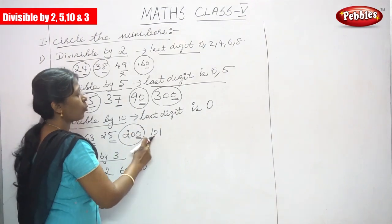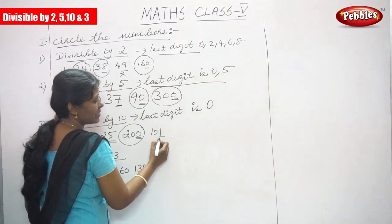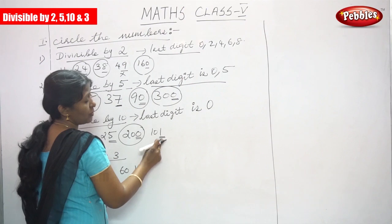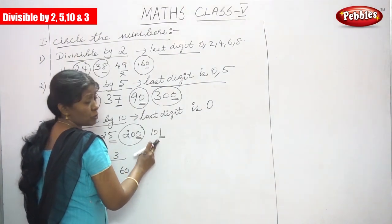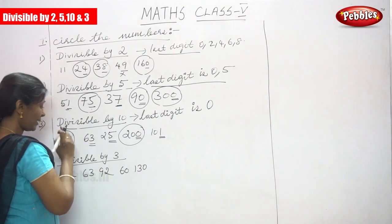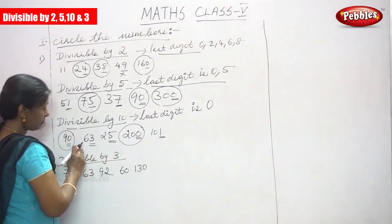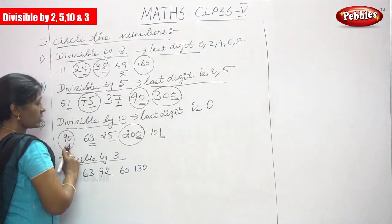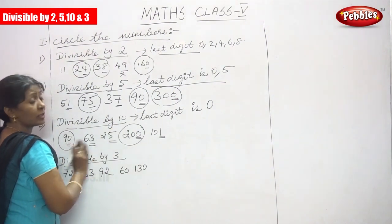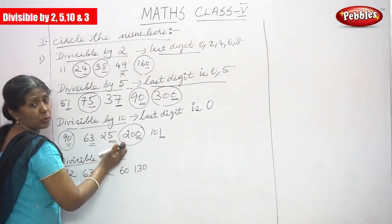Next is 101: the last digit is 1, so it does not end with 0 and is not divisible by 10. Do not circle the number. The answers are 90 and 200 — these are the numbers divisible by 10, so you have to circle only these numbers.